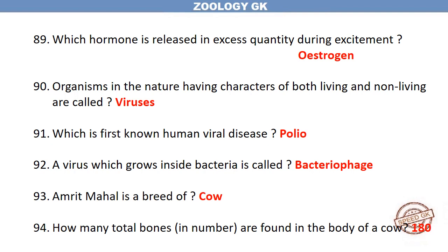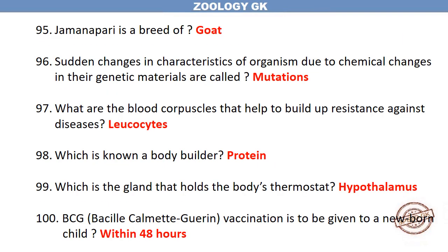A virus which grows inside bacteria is called a bacteriophage. Amrit Mahal is a breed of cow. How many total bones are found in the body of a cow? 180. Jamnapari is a breed of goat.